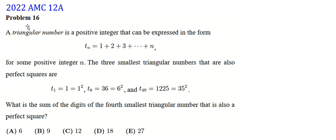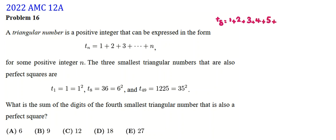The problem says a triangular number is a positive integer that can be expressed in the form T_n = 1 + 2 + 3 + ... + n for some positive integer n. The three smallest triangular numbers that are also perfect squares are T_1 = 1 = 1². For T_8, we check 1 + 2 + ... + 8, and by the formula, the sum 1 to n equals n(n+1)/2.